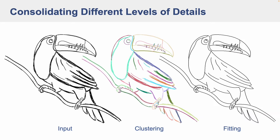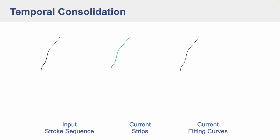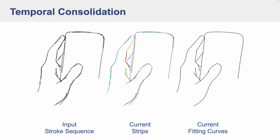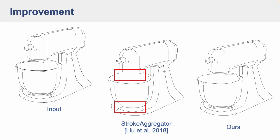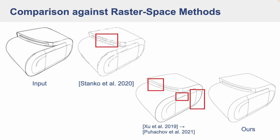Our first consolidation method, using values determined by perception studies, is able to handle different levels of details. Our second consolidation method uses additional cues and a drawing order to work with incremental stroke input. This method outperforms our previous method and demonstrates superior performance over raster space methods.